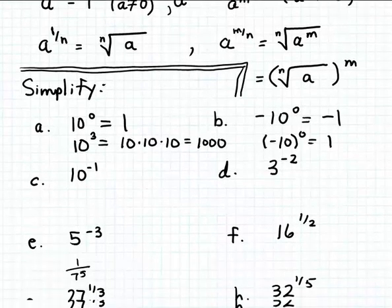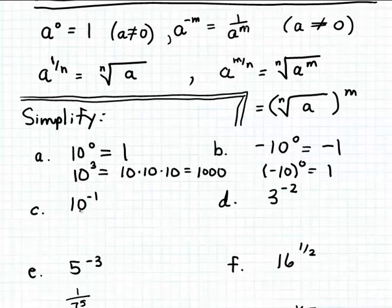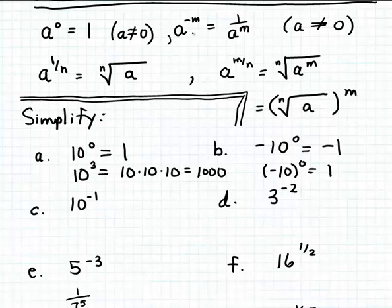Now suppose we want to raise the base 10 to the minus one power. Minus one is an integer but not a natural number, so how do we simplify this? That's the second rule for integer exponents to memorize: when raising a base to a negative integer power, take the reciprocal of the base and change the exponent to a positive integer. So 10 to the minus one power equals one over ten to the first power.